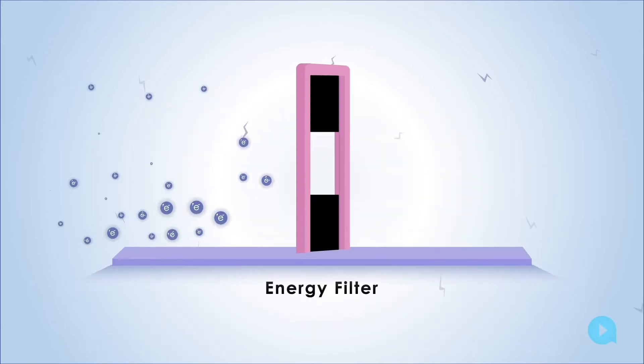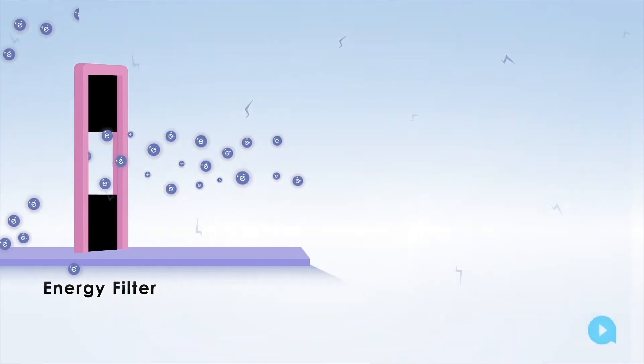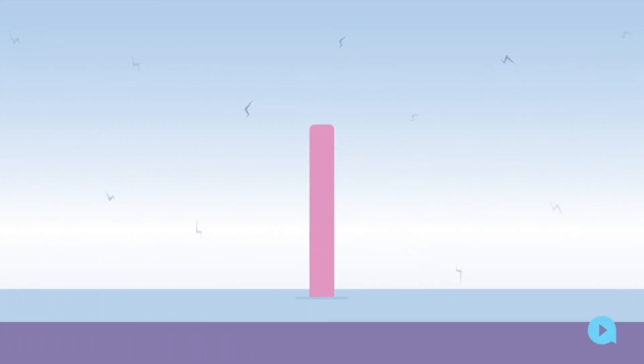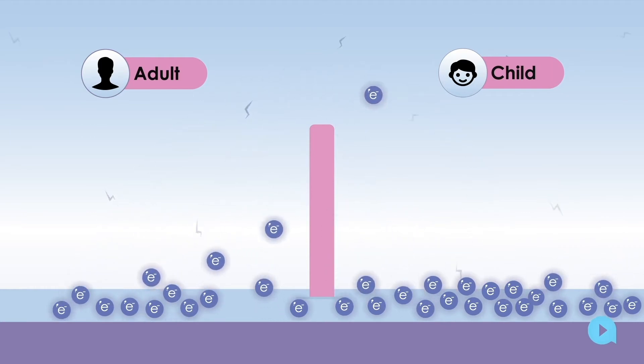There's another way. We can let electrons of particular energies through a filter more easily than other energies. Think of a fence with balls being thrown about randomly by children on one side and adults on the other. Children will only sometimes get their balls over the fence. The adults probably throw faster or higher, so more of their balls will go over the fence.